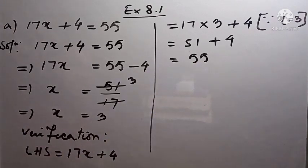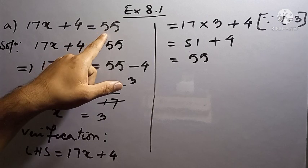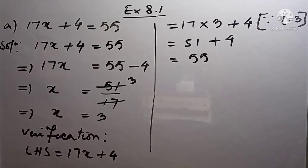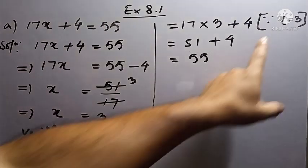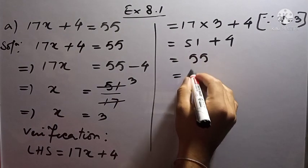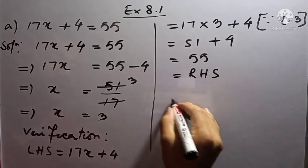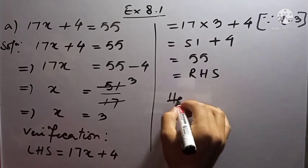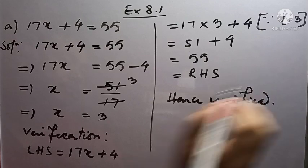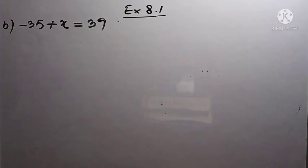On the right hand side we have just 55. So left hand side equals 55 and right hand side equals 55. That means left and right are equal when x is 3, so our answer is verified. Left hand side equals right hand side, hence verified. We now have question B: minus 35 plus x equal to 39.